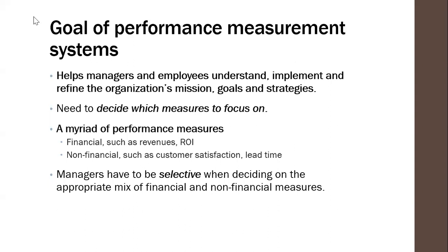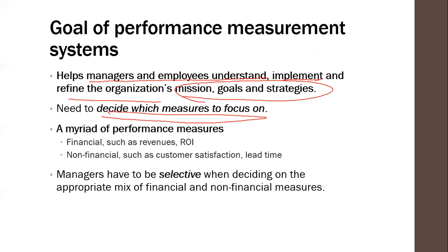What are the goals of performance measurement systems? Number one, it helps managers and employees understand, implement, and refine the organization's goals and strategies. Every manager has many tasks. By setting up a performance management system, the manager will know what is most important — what are the critical tasks in the organization they need to focus on. So it decides which measures to focus on. For example, if you're a sales manager, you have many responsibilities: sales calls, getting orders, ensuring delivery, invoicing, collection, relationship management, go-to-market strategies, promotions, and community engagement.